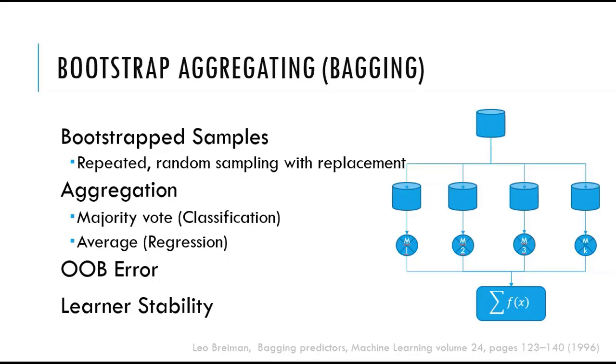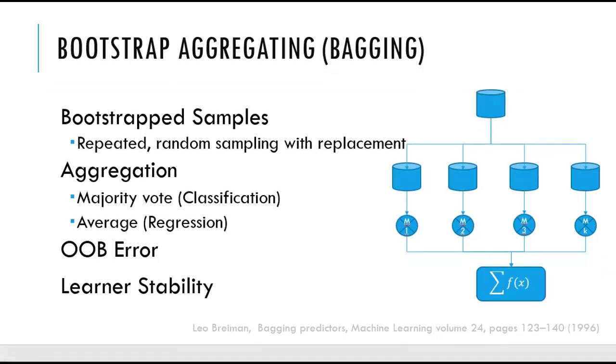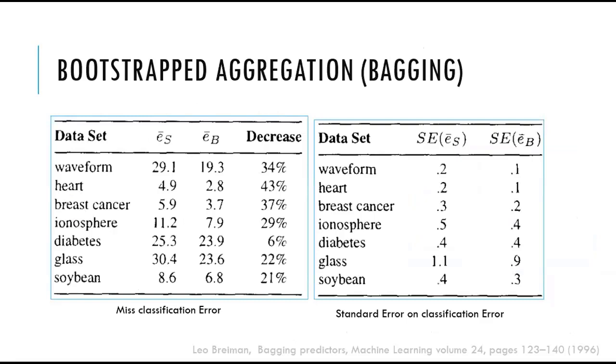Breiman provided an experiment to prove his point of view on this data set where we see that misclassification error is reduced considerably compared to the one large decision tree. So ES is for one large monolithic decision tree trained on these data sets, and the error is 29.1 for waveform data set. But when we apply bagging, the error reduces to 19.3. That means 34% decrease. And we can see the same effect on other data sets.